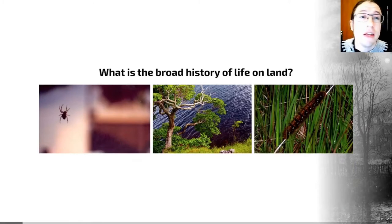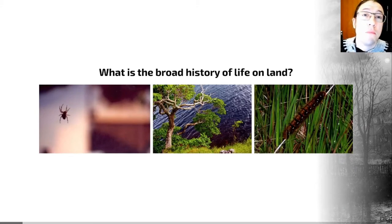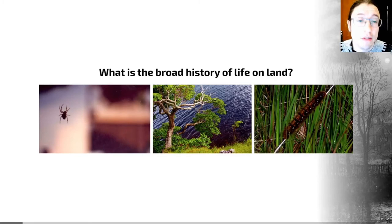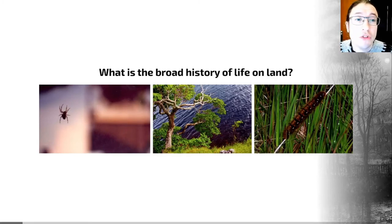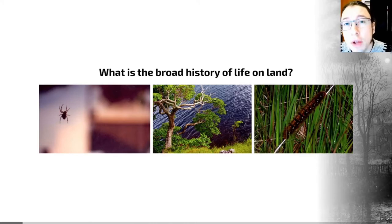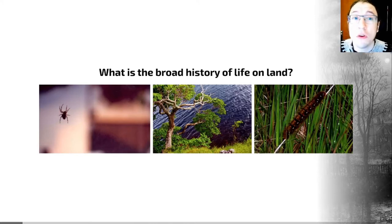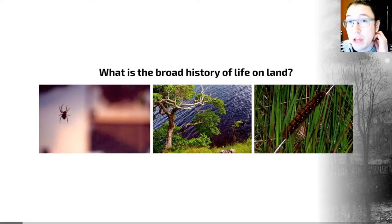That context is that terrestrial ecosystems have been occupied throughout much of, but not all of, the last 542 million years since the Cambrian Explosion. The shape and patterns of change of life on land are similar to those we see in the marine biosphere, but they're not always synchronous — they don't always occur at the same time.